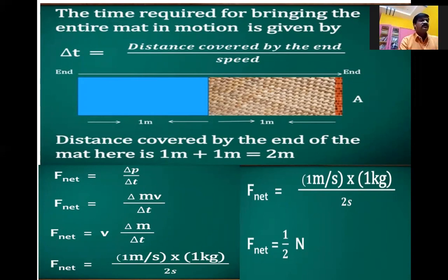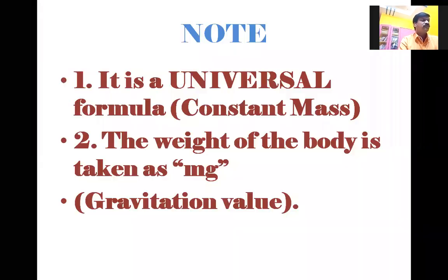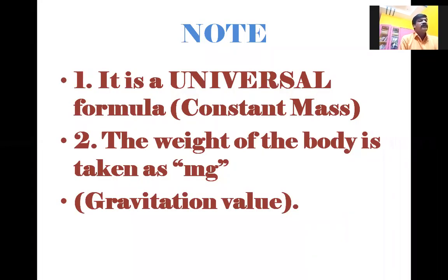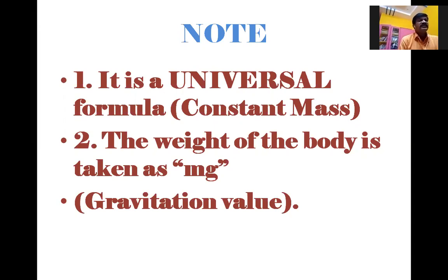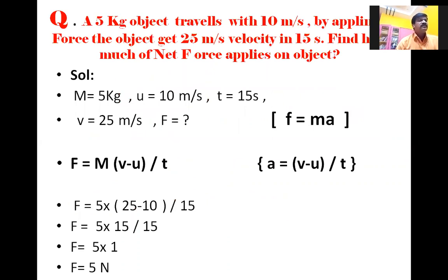A note: Newton's second law can be applied universally, but the mass must be constant. So it is a universal formula at constant mass. The weight of a body is taken as mg, where g is the gravitational value.